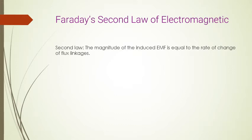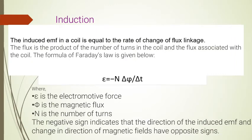The second law of electromagnetic induction gives the magnitude of the induced EMF. The magnitude of the induced EMF is always equal to the rate of change of flux linkage — that is, the rate of change of the flux linked with the coil. The induced EMF in a coil is equal to the rate of change of flux linkage, where flux linkage is the product of the number of turns in the coil and the flux associated with the coil.